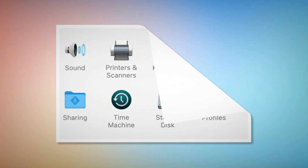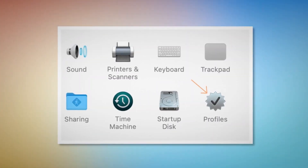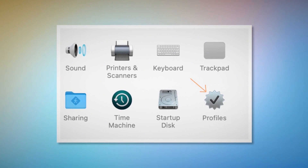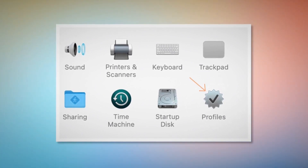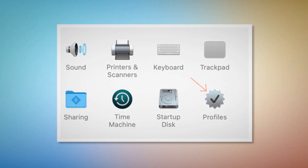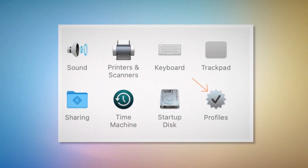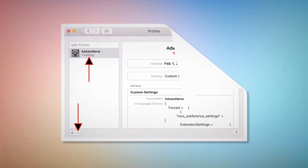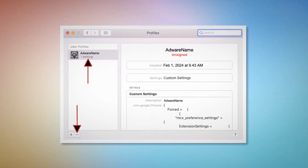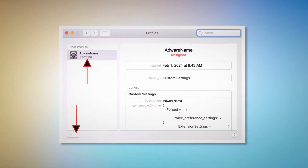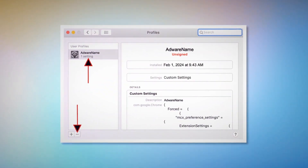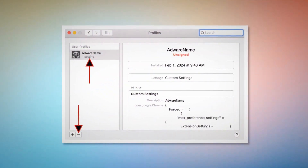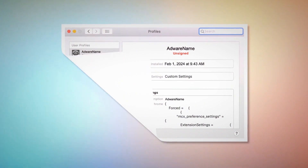But if you can find the Profiles icon there, as shown in the screenshot, then click on it. Once you click on the Profiles icon, you will be taken to a window like this. As shown in the screenshot, select the unknown or doubtful profile and then click the minus button to remove the profile.